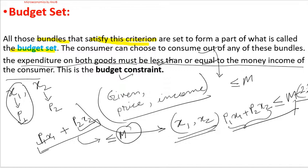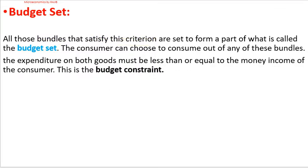Before discussing the budget line, let's look at Example 2.1 from the book. The money income m = ₹20. The price of both goods p1 = p2 = ₹5. Now we need to find the bundles the consumer can afford to buy.